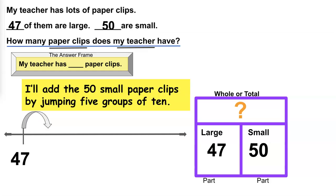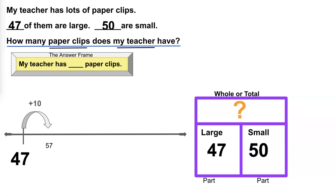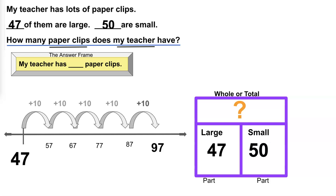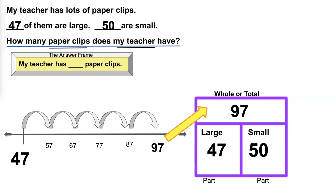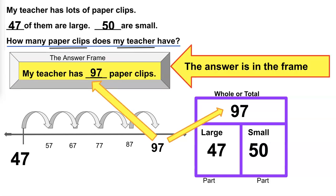I'll add the 50 small paperclips by jumping 5 groups of 10. 57, 67, 77, 87, 97. 97 is my whole or total. But I'm not done until the answer is in the frame. My teacher has 97 paperclips.